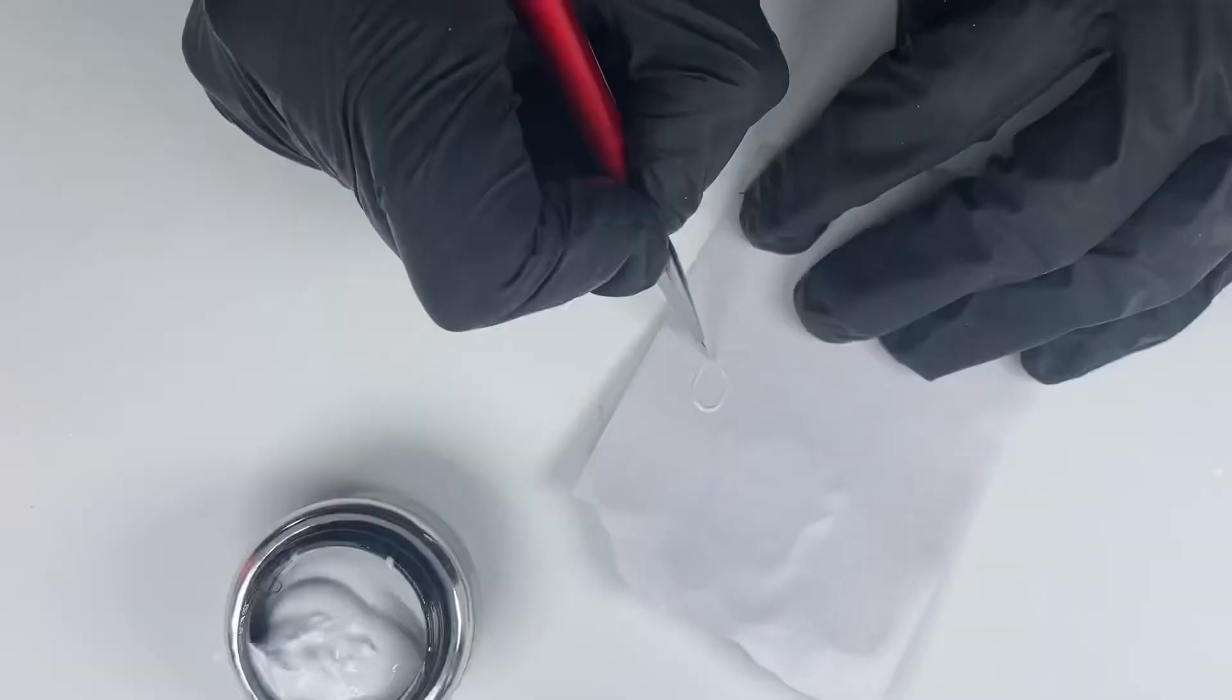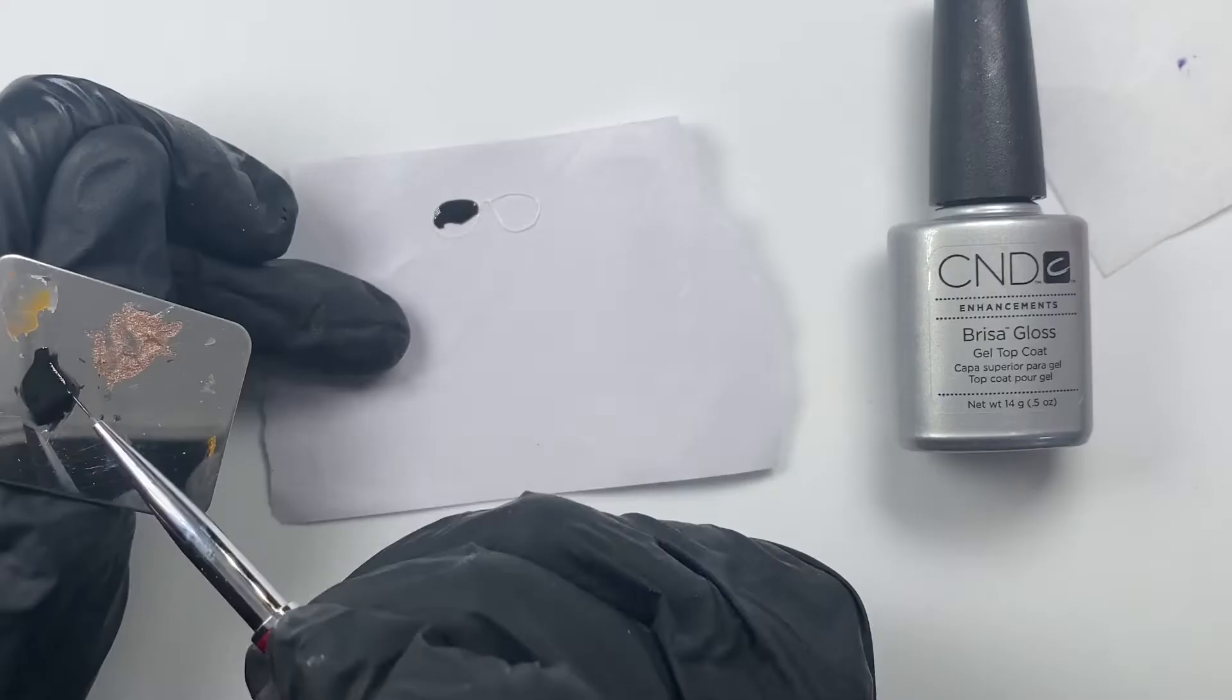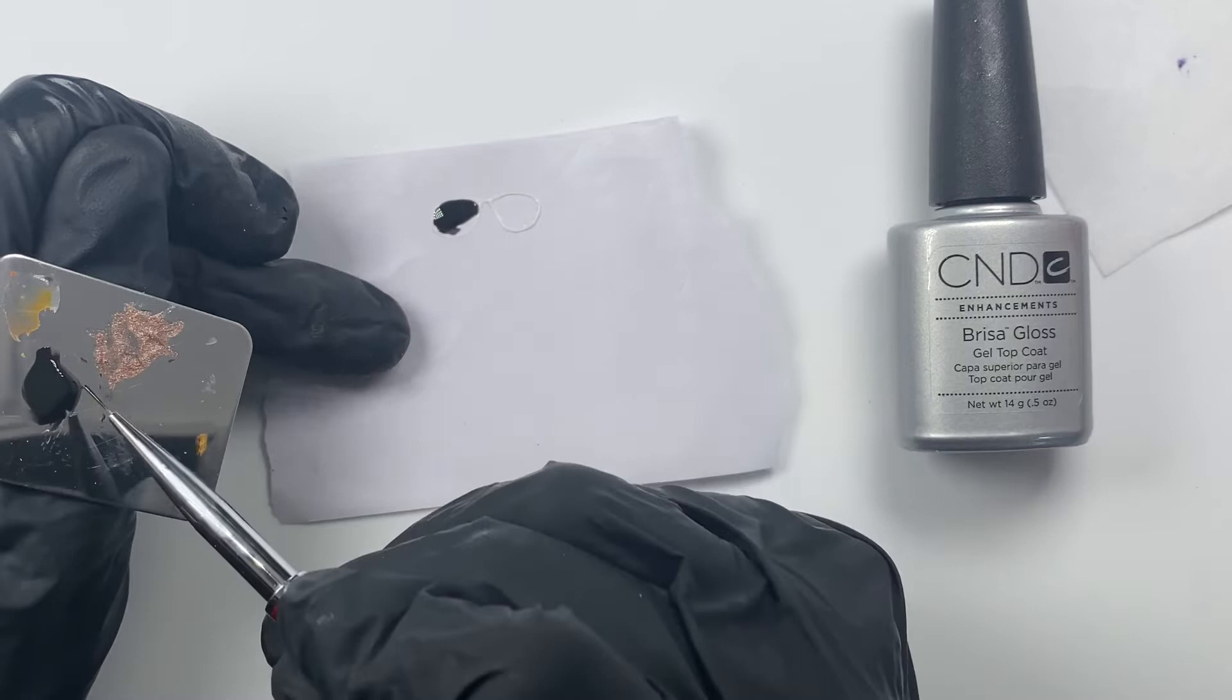He was also known for his oversized sunglasses which I'm creating here using gel polish. After making a framework with Brisa gel I then filled the inside with clear top coat and a little bit of CND Blackpool. This gave me a translucent effect when it was cured.